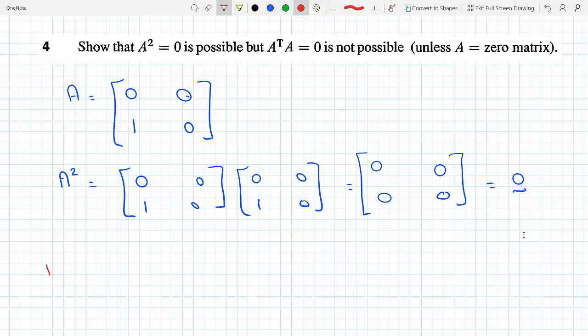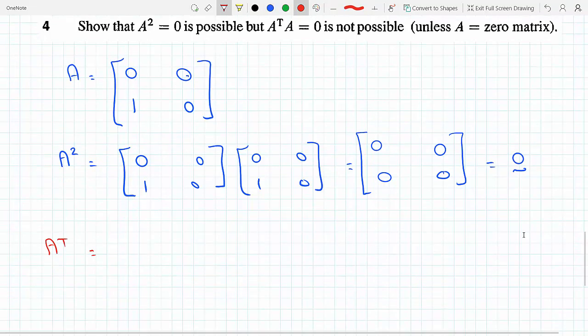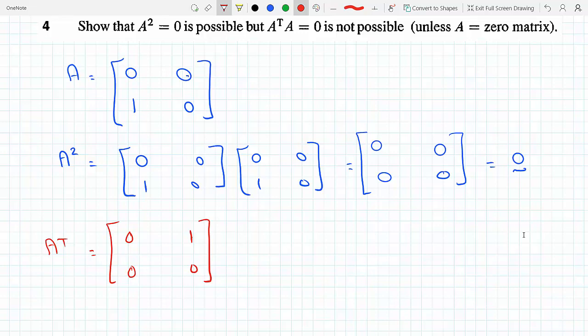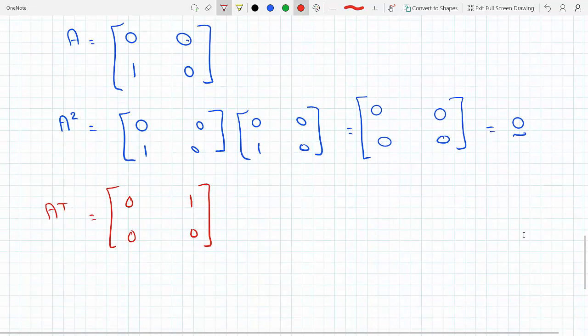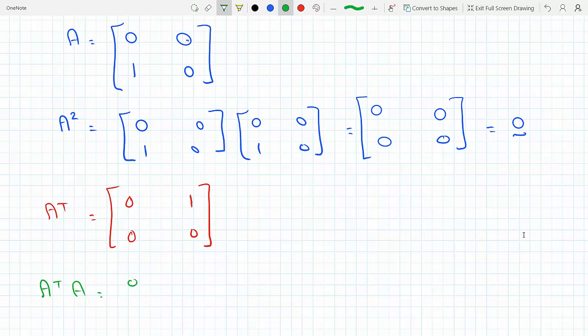Now let's do A transpose A. For A transpose, the row becomes a column or the column becomes a row. The first row is zero zero, it becomes the first column. The second row from A is one zero, becomes the second column. Let's multiply A transpose times A.